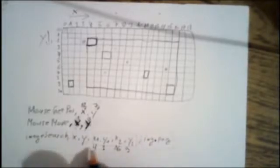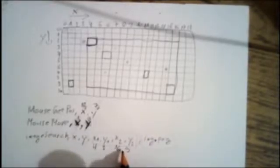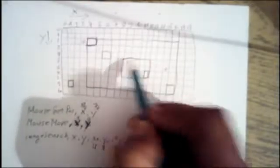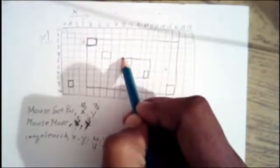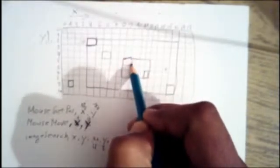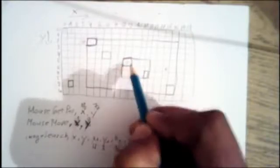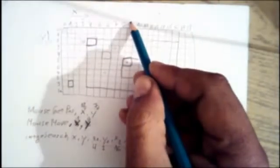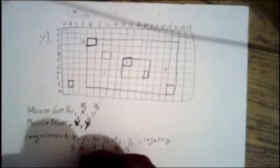When ImageSearch finds the image within the area, it returns the pixel of the top-left corner of the image. In my example it returns 9 for X and 5 for Y.